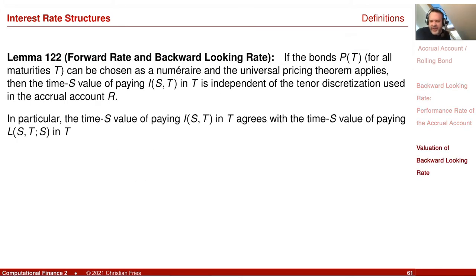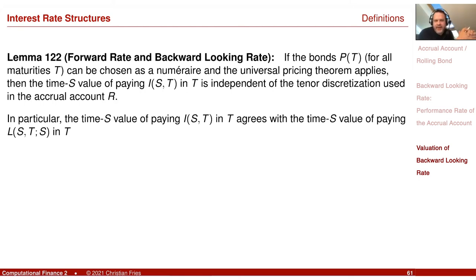There is a relation between the backward-looking rate and the forward-looking rate, and this is an important thing we will need to prove. Here is the lemma: given the universal pricing theorem, if I can perform valuation using an equivalent martingale measure, what is the value of receiving the backward-looking rate at the end of a period versus receiving the forward rate at the end of the period? The nice result is that the value of the two is the same.